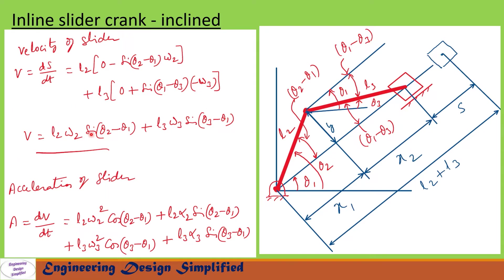To find the acceleration of the slider, we differentiate the velocity equation with respect to time. After differentiation, A = dV/dt = L2 · omega 2² · cos(theta 2 − theta 1) + L2 · alpha 2 · sin(theta 2 − theta 1) + L3 · alpha 3 · sin(theta 3 − theta 1). In these equations, omega 2 is angular velocity of the crank, alpha 2 is angular acceleration of the crank, omega 3 is angular velocity of the coupler, and alpha 3 is angular acceleration of the coupler.